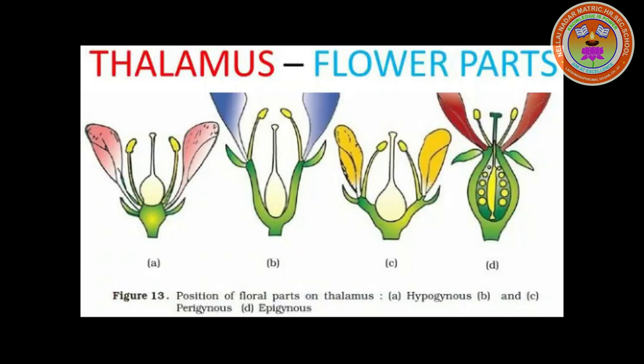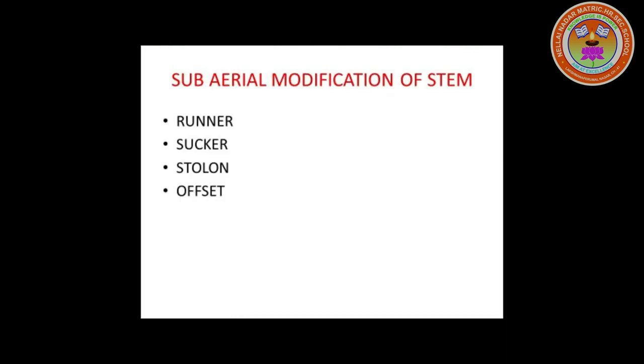Thalamus. It is the axis of the flower and contains flower organs such as calyx, corolla, androecium, and gynoecium. It consists of nodes and internodes. Next topic is Sub-Aerial Modification of Stem.